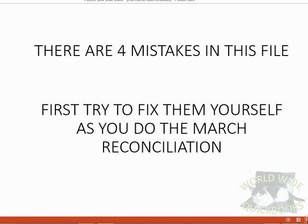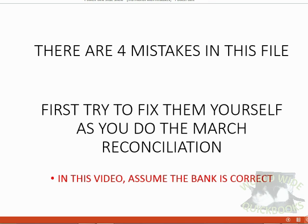First, try to fix them yourself as you do the reconciliation. See if you can get the numbers to match after finding and fixing all four mistakes. In this video, assume the bank is correct. Go slowly, be careful, and write down the mistakes you see. After you try it yourself, unpause this video and watch me do the reconciliation. But right now, pause and try the March reconciliation yourself.